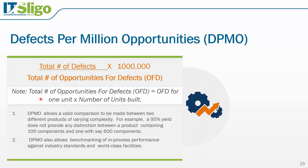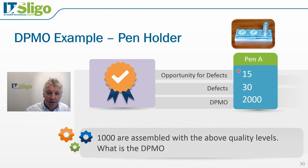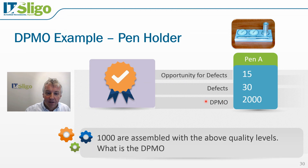Opportunities could be lines of software code, parts, and so on. DPMO allows comparison between two products of different complexity, and in many cases we can benchmark data. For example, Pen Holder A has 15 opportunities for defects. We assembled 1,000 of them and found 30 defects. So the DPMO is 30 divided by 15 times 1,000 — which is 15,000 — multiplied by one million, giving us 2,000 DPMO.